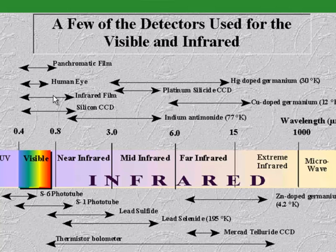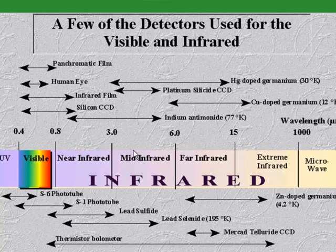Infrared film actually gets into that near-infrared spectral region. Then we have detectors sensitive to longer and longer wavelengths: the mid-infrared spectral region, and then the thermal or far-infrared spectral region.